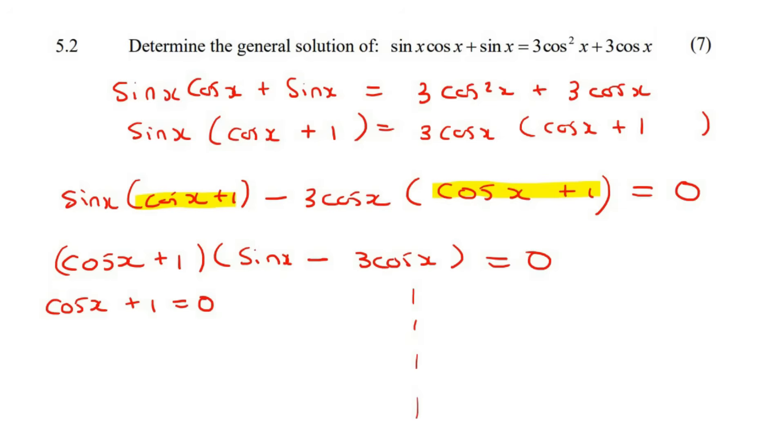For this one, you're just going to take the negative one to the other side. And then for this one, you see we have a sin and a cos and the angles are the same - that's going to be a tan. So the way you get a tan is you take this three cos x over to the other side.